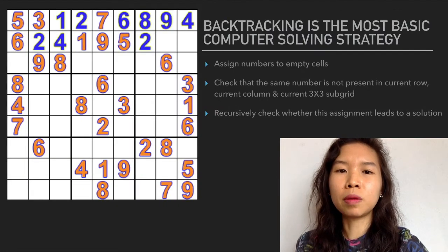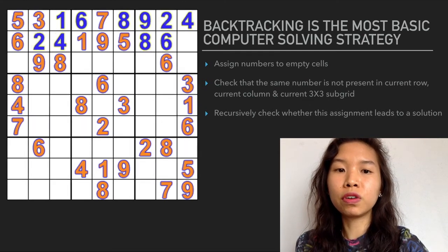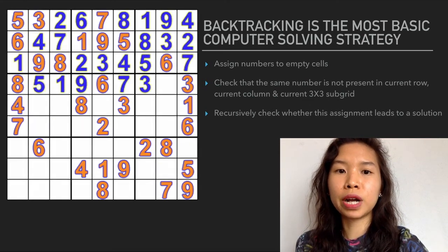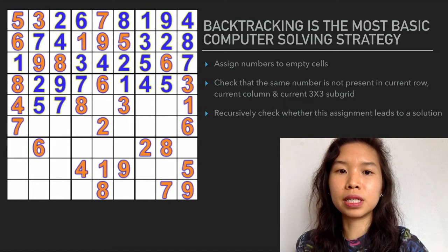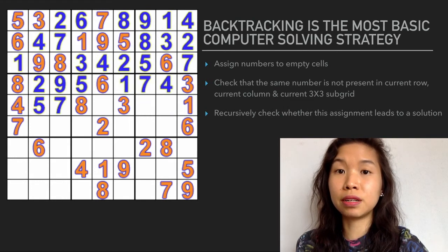Backtracking is probably the most basic Sudoku solving strategy for computer algorithms. This algorithm is a brute force method which tries different numbers, and if it fails, it backtracks and tries a different number.